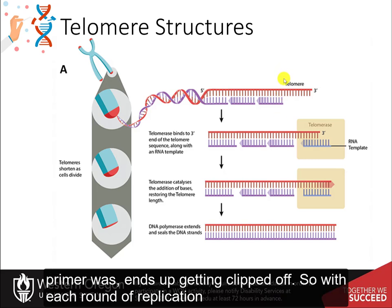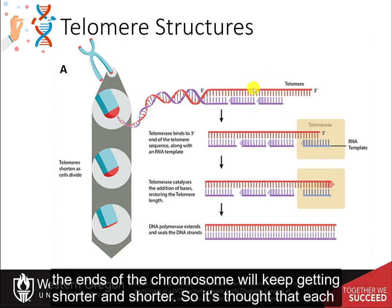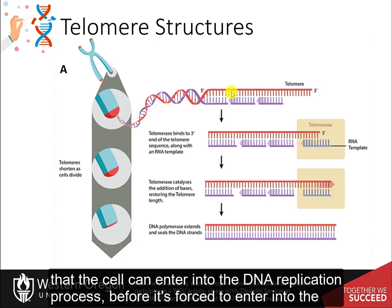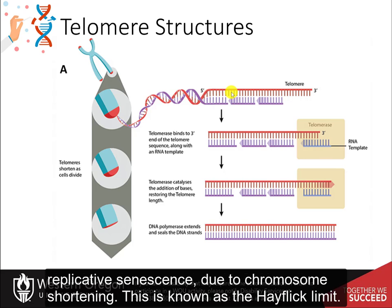With each round of replication, the ends of the chromosome keep getting shorter and shorter. It is thought that each cell has an inherent mitotic clock — a maximal number of times it can enter DNA replication before being forced into replicative senescence due to chromosome shortening. This is known as the Hayflick limit.